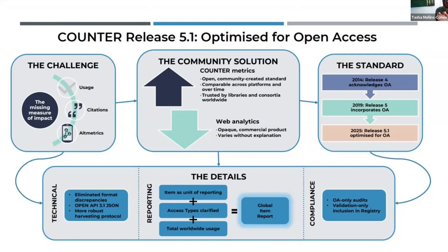I'm going to give you a little bit of a rundown of 5.1 and why it's so good for open access. The first is that we have sorted out some of our technical difficulties that made item-level reporting — that very granular reporting of articles, book chapters, or specific data sets — difficult. So those discrepancies have gone. It's now very easy to report at this very granular level, including a much smaller report delivery mechanism in the form of an OpenAPI 3.1 compliant JSON schema.